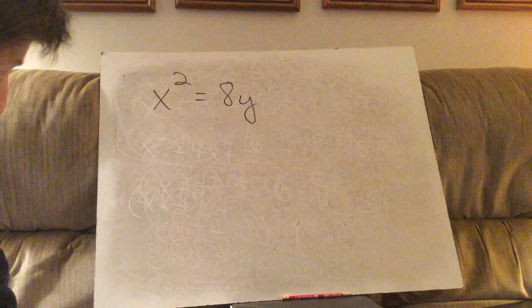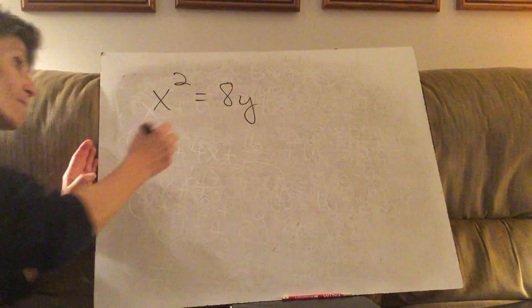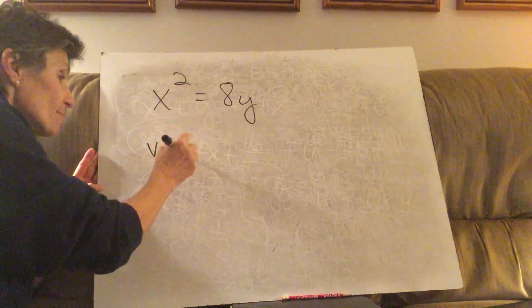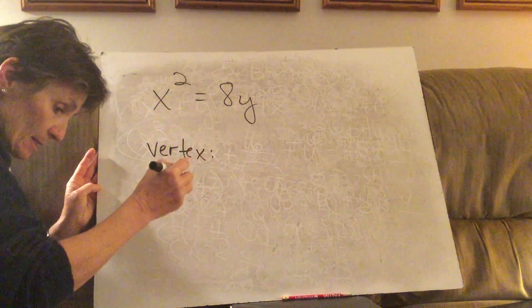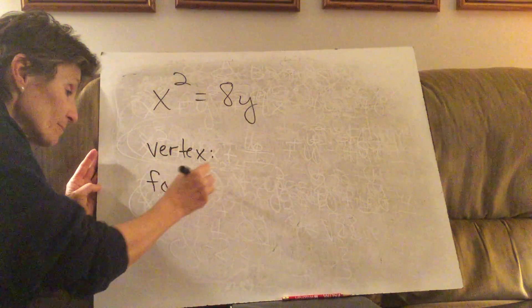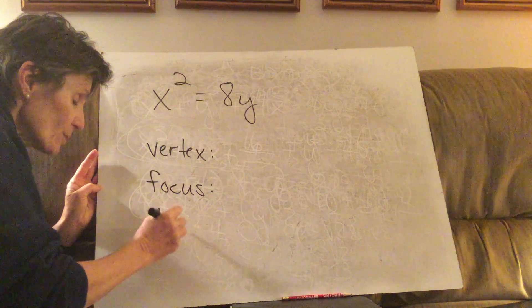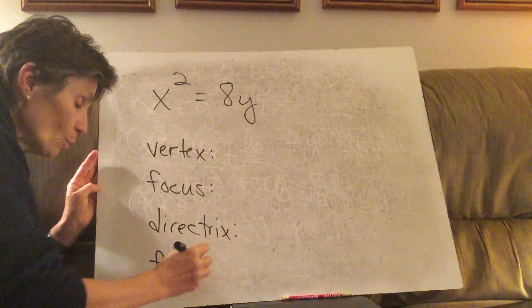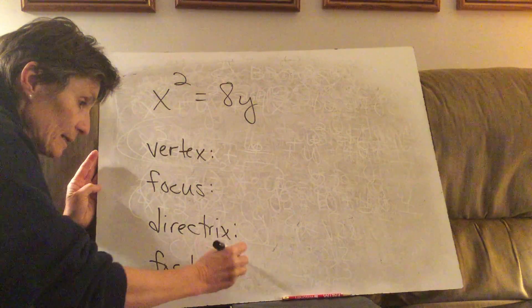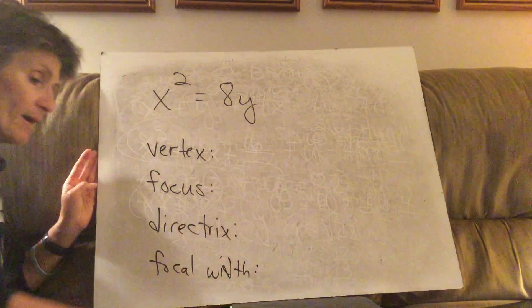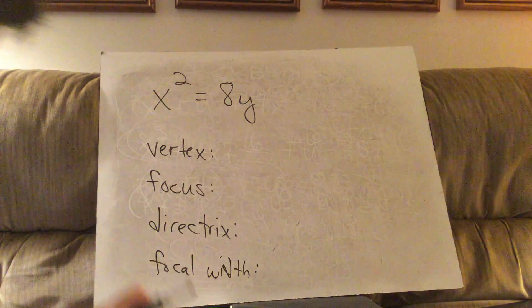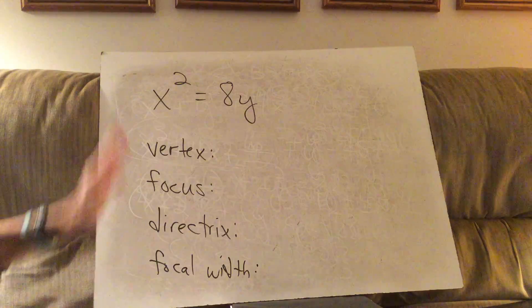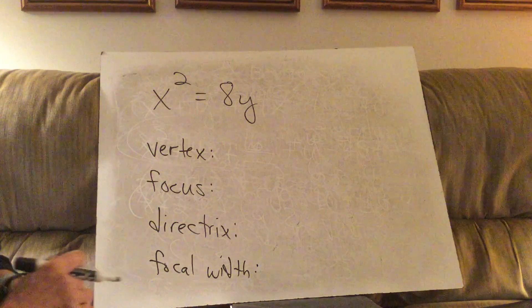For the parabola there are four pieces of information you're asked to find: the vertex, the focus, the directrix, and what's called the focal width. I'll explain this terminology as we go through the problem.